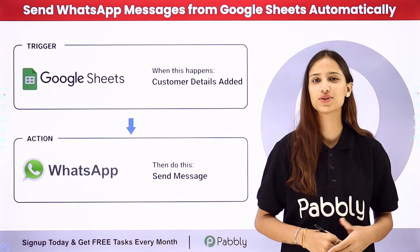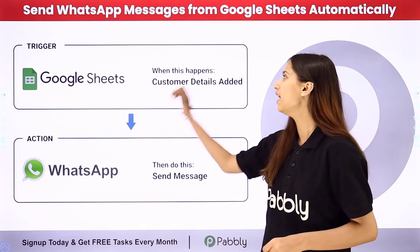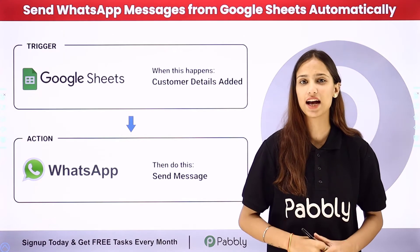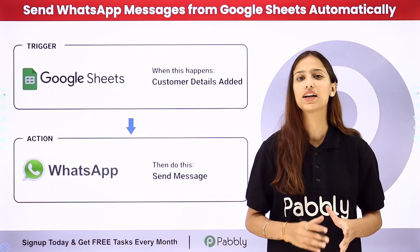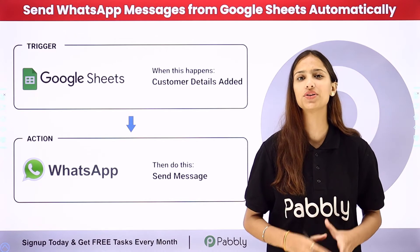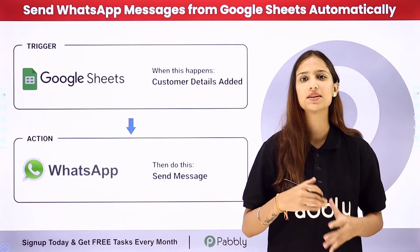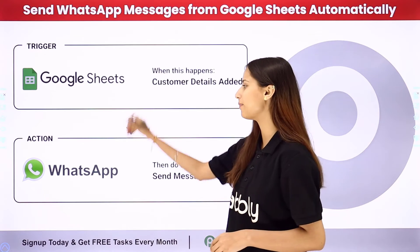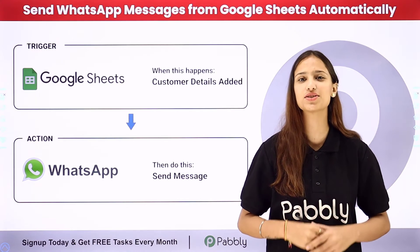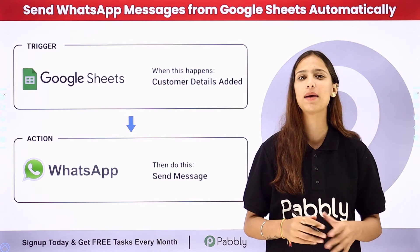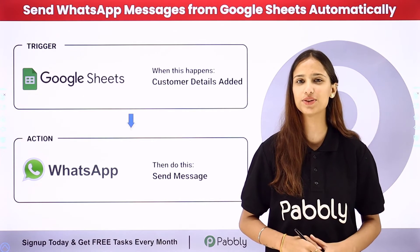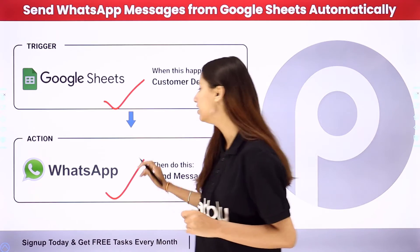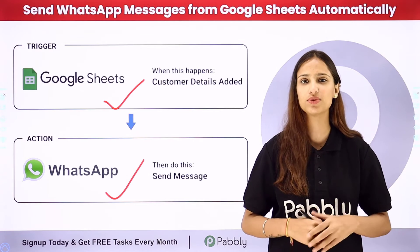Hello everyone, welcome back to Pabbly. In today's video we will understand how to send WhatsApp messages from Google Sheets automatically. In a Google Sheet I've added the details of my existing customers and I want to update them about the new product launch by sending a WhatsApp message. To do this I need to set up a connection between these two applications using Pabbly Connect, which follows the concept of trigger and action. The trigger application will be Google Sheets and the action application will be WhatsApp Cloud API.